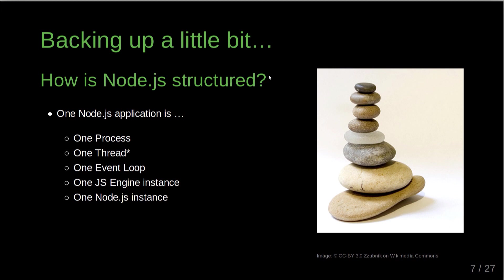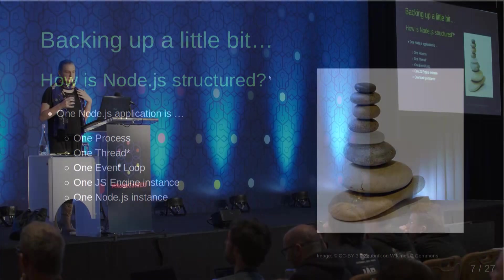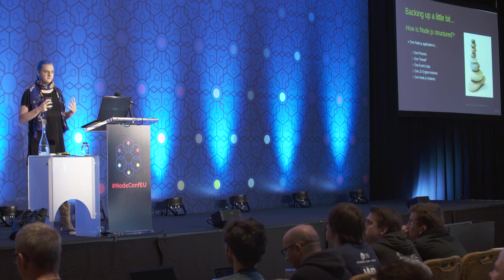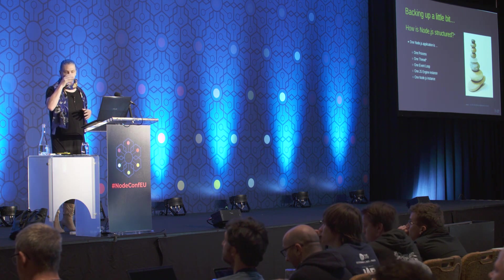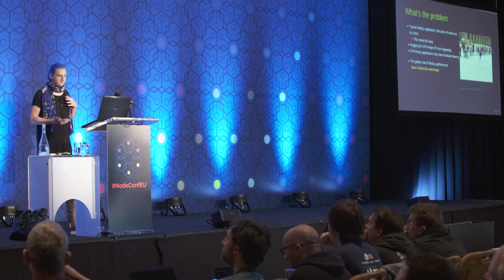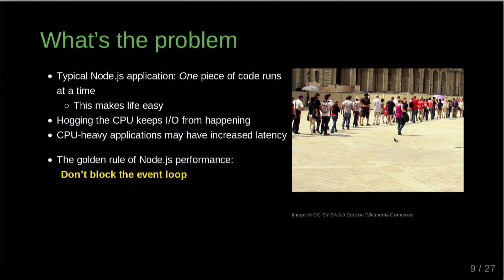You have one event loop, one JavaScript engine instance — one V8 instance — and on top of all of that, one set of Node APIs. There is an issue with having this single-threaded approach: only one piece of code can run at a time. That actually makes life easy because you don't have to worry about classical race conditions in multi-threaded code. It's generally just easier to have one thing happen at a time.